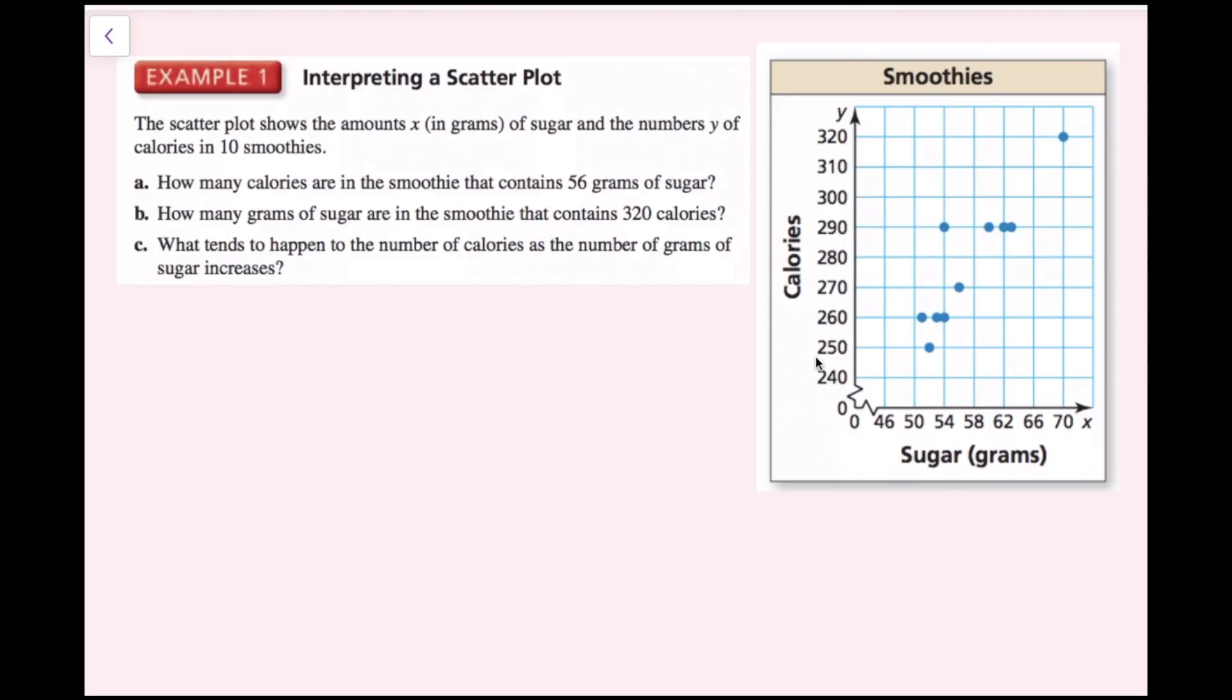Part A: how many calories are in the smoothie that contains 56 grams of sugar? Grams of sugar is the x axis, so I want to find 56 on the x axis and figure out what ordered pair that corresponds to. Here's 56 right here between 54 and 58. If I go up, there's only one, and this ordered pair says that the smoothie that has 56 grams of sugar is 270 calories.